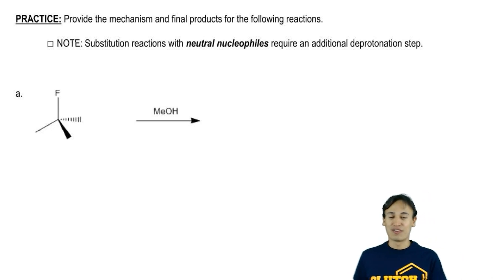Let's go ahead and start off by reading the question. It says, provide the mechanism and final products for the following reactions and we're going to start off with A, which is giving us some kind of alkyl halide and some other reagent.